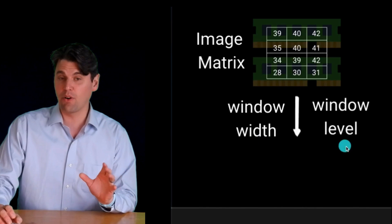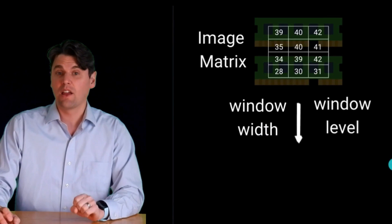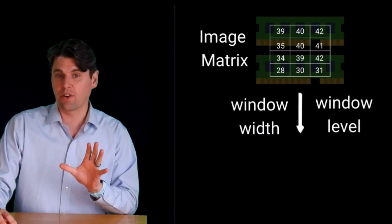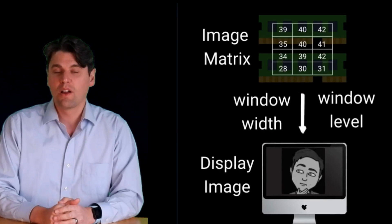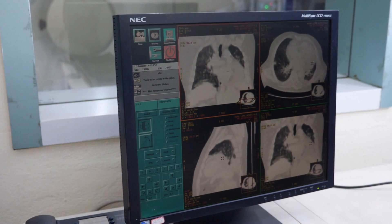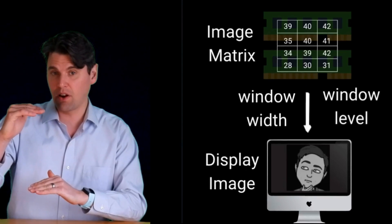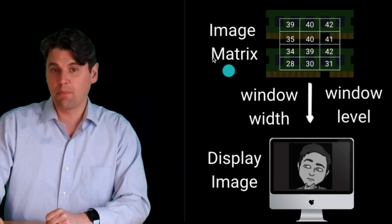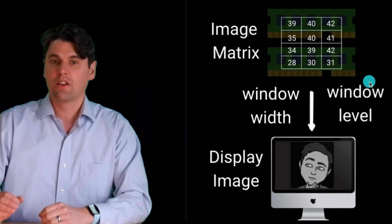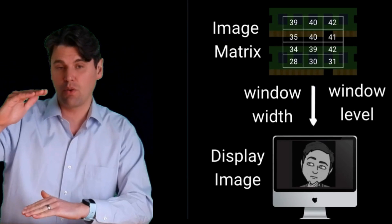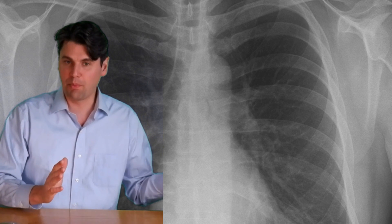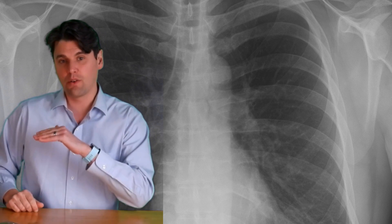The computer keeps that matrix stored, and then depending on the window width and window level that you select, you're going to have a different image displayed to the actual monitor. On standard monitors there are 256 shades of gray, so the values are going to be mapped from Hounsfield units to a scale from 1 to 256. If you have a really expensive mammography display it might have significantly more — from 1 to 1024.